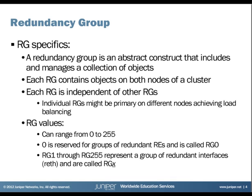When dealing with redundancy and clustering, we have the concept of a redundancy group. A redundancy group is an abstract concept — it has objects in both nodes. One of the objects in one of the nodes will be the primary for that redundancy group, and the other will be the secondary and not active for that group. Redundancy groups can range from 0 to 255. Redundancy group 0 is reserved specifically for the relationship between the two routing engines — the control plane.